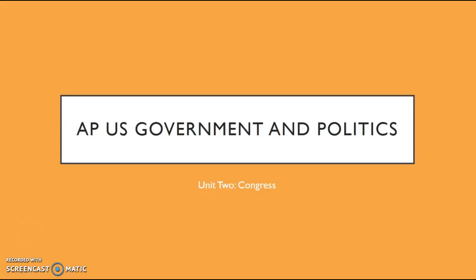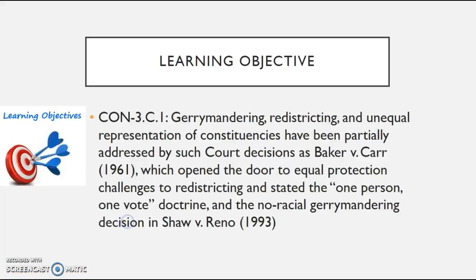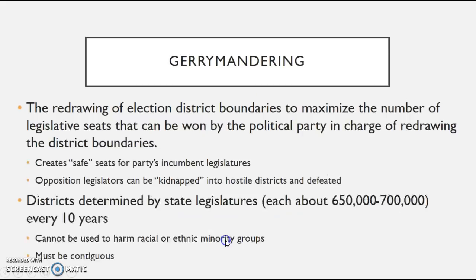Hi, this is Calcio Fugowski for AP Gov. In this video we're going to be looking at gerrymandering — a significant tool used by politicians at the state level when they redistrict. We're going to be covering two important Supreme Court cases: Baker v. Carr as well as Shaw v. Reno. These are two cases you'll definitely need to know for the AP Gov exam.